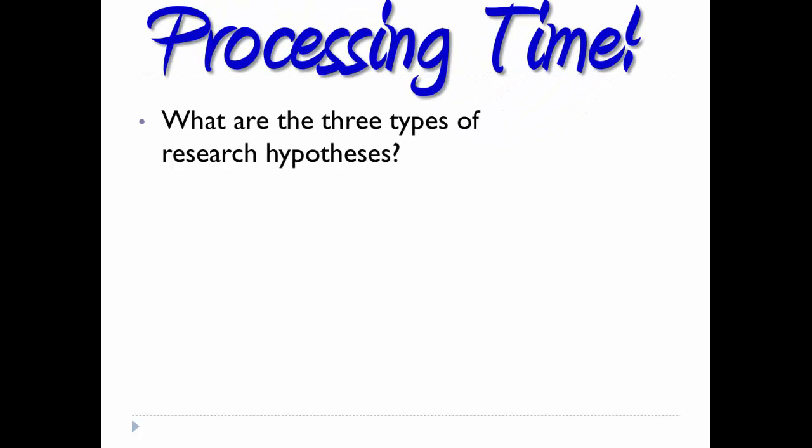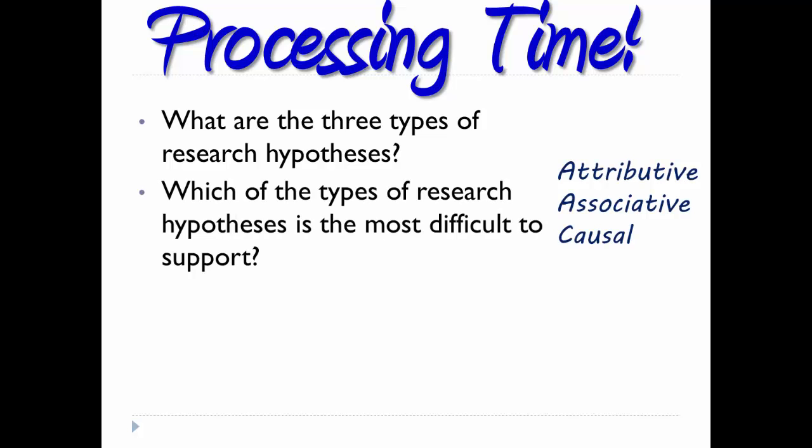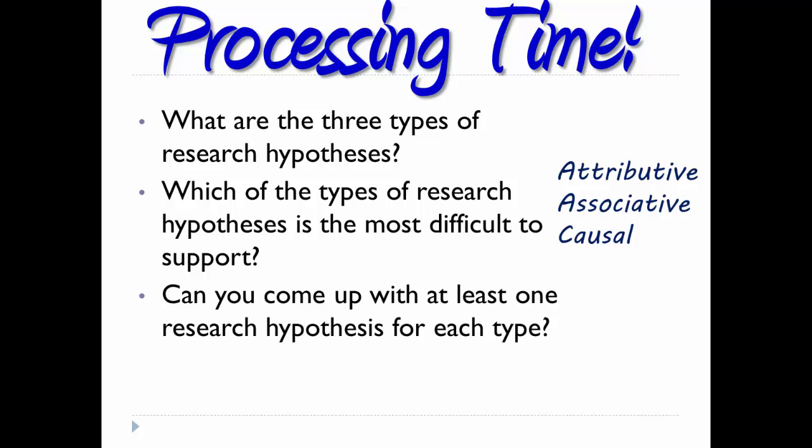What are the three types of research hypotheses? Which of the types of research hypotheses is the most difficult to support? Can you come up with at least one research hypothesis for each type? This last one is important because you will need to develop research hypotheses — or in this class, research objectives — for the research project you will be designing and implementing. Having a good research hypothesis or good research objectives is the first step in conducting good research.